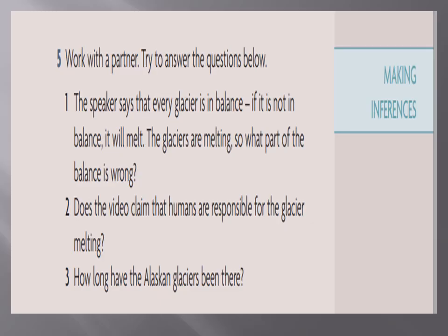Work with your partner and try to answer: What does making an inference mean? These questions ask about pieces of information not mentioned directly in the video, but you can infer — you can understand them from what the speaker says, even though it's not mentioned directly. The speaker says that every glacier is in balance; if it's not in balance, it will melt. The glaciers are melting — so what part of the balance is wrong?